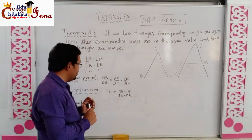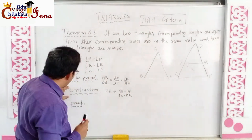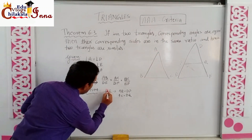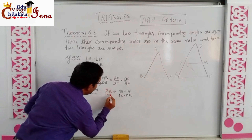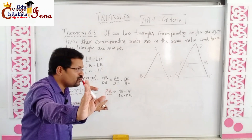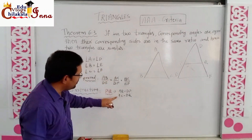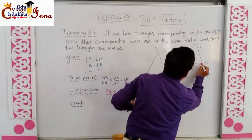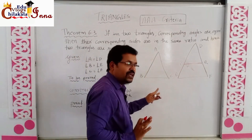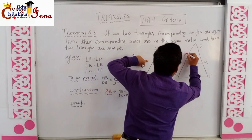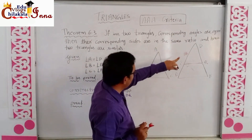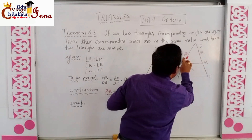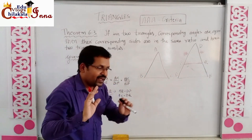To prove that, we are going to use a small construction. We construct PQ such that AB equals DP and AC equals DQ. So DP equals AB and DQ equals AC — that is our construction.